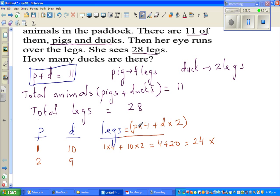So for legs we have this formula: pigs times 4. So pigs are 2, 2 pigs times 4 plus ducks are 10, sorry 9, times 2. So multiply, 2 times 4 is 8 plus 18, which is 18, which is 26. So this is not the right answer.